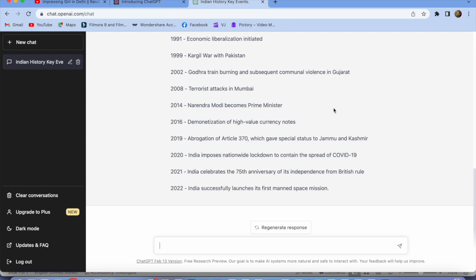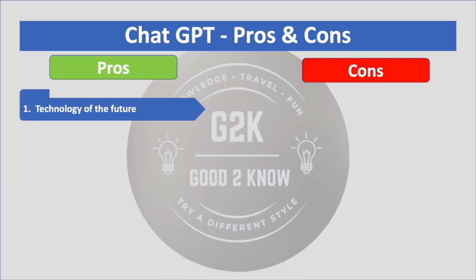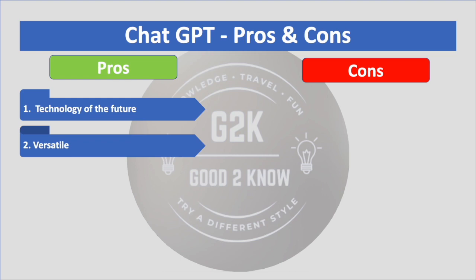Let's move on to the pros and cons. I've listed down five pros and five cons — please comment and let me know if there are any others from your perspective. The first pro is technology: ChatGPT is going to be the technology of the future. As we discussed, it may be a killer of Google and is going to be more prominently used by all users. We literally understand this is going to be the technology of the future.